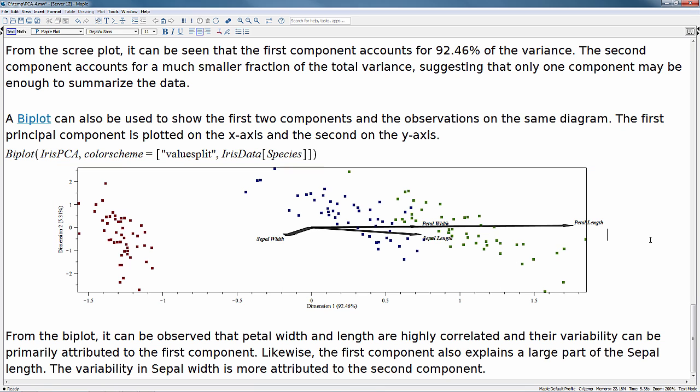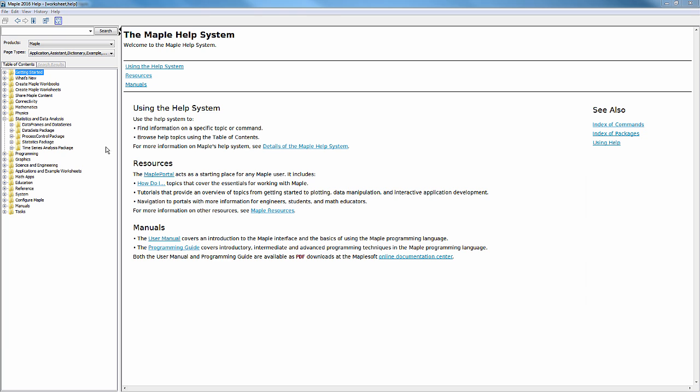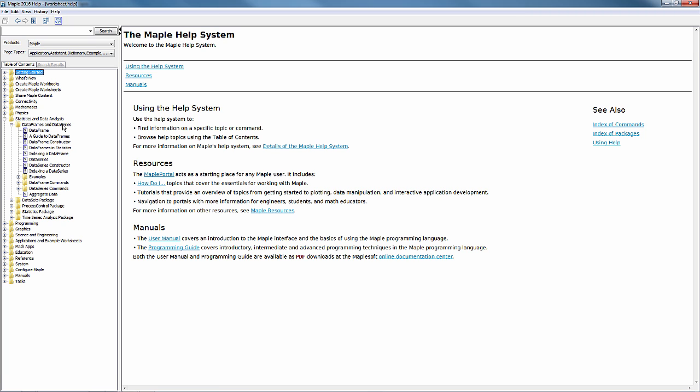Those are just a few of the ways you can use the PCA command from the statistics package in Maple on a data frame of information. If you'd like to see this example in Maple's help system, open up the statistics and data analysis section, then under data frames and data series, in the examples folder, you'll find the iris dataset example worksheet located here.